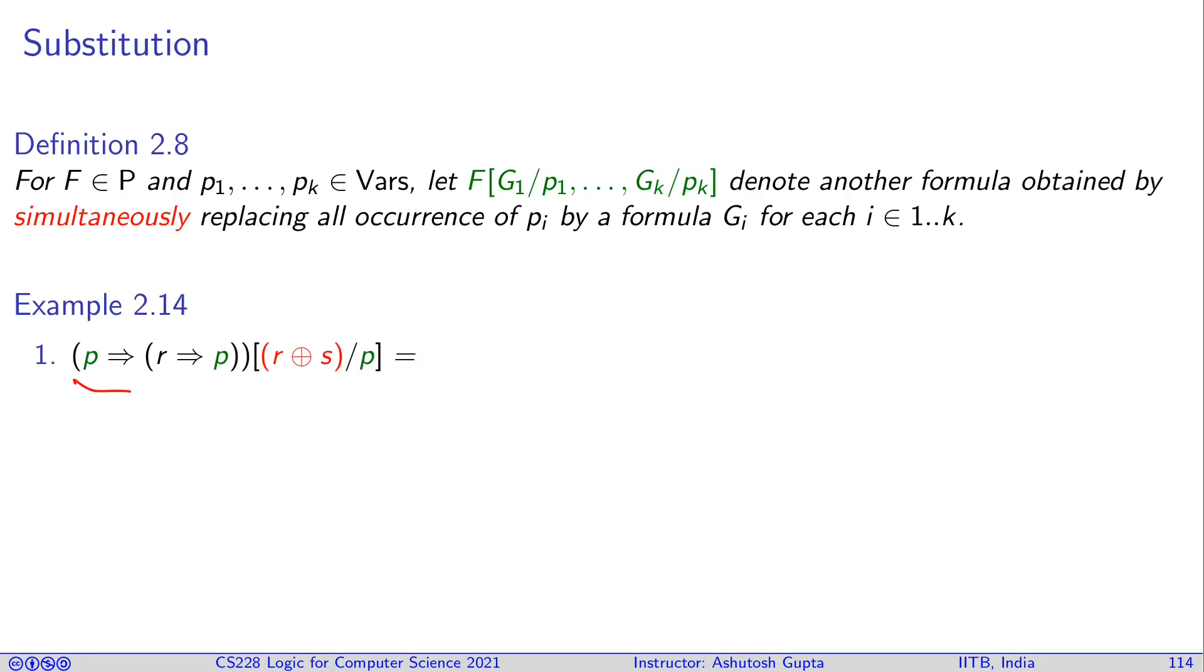Let's look at an example. Here is the formula. And I want to do substitution wherever p occurs. So you find p and put this. Note that simultaneous substitution is not equal to sequential substitution. Here I'm trying to apply these two substitutions together. And if you do the same thing one after another, first apply this substitution and then try to apply this substitution, it will produce a different outcome. Try to work it out and see what is the difference.